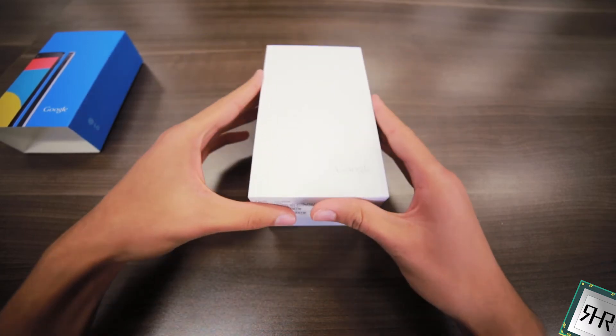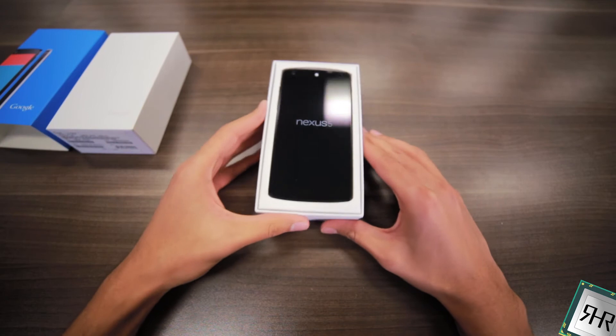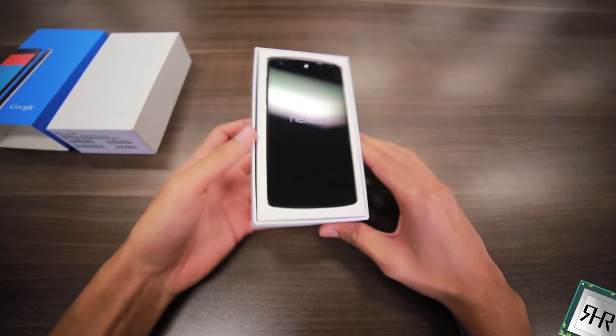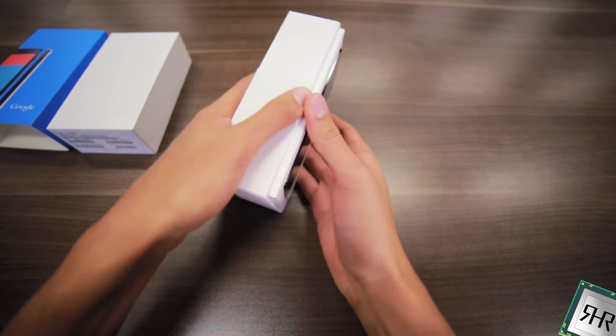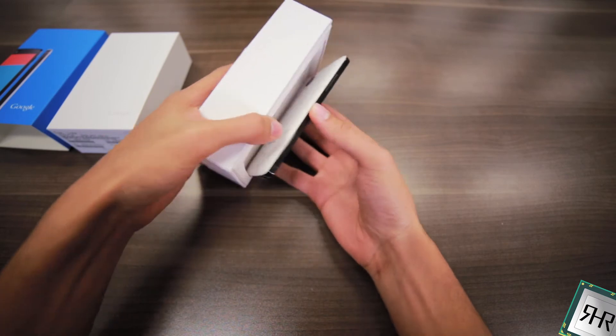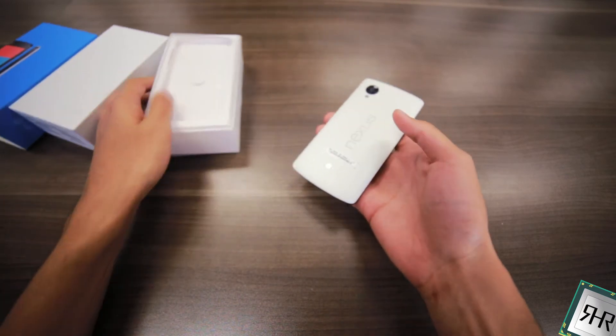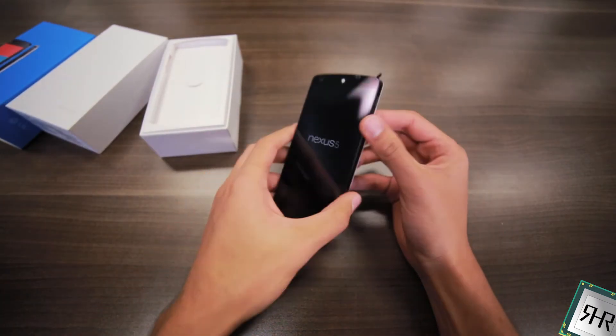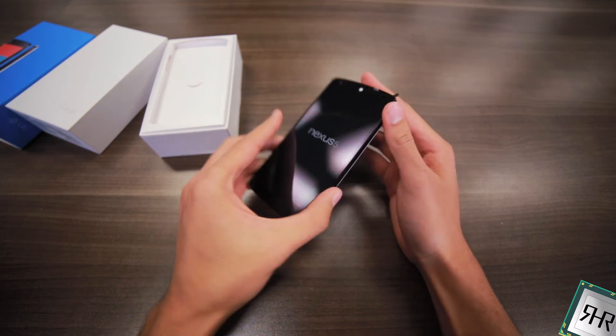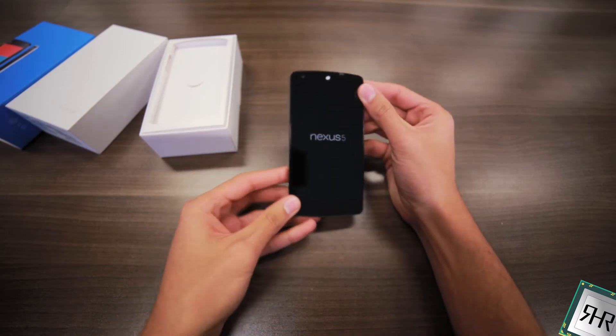Now if we open this up we get the Nexus right off the bat. Gorgeous phone. Let's see if we can pop that out of there without breaking it. Beautiful. As you can see this is the actual Nexus, white background and it looks pretty good.